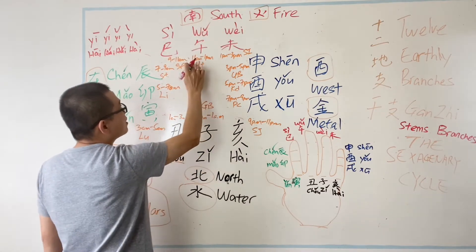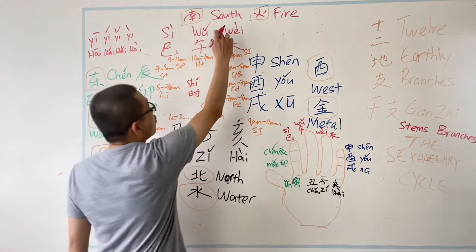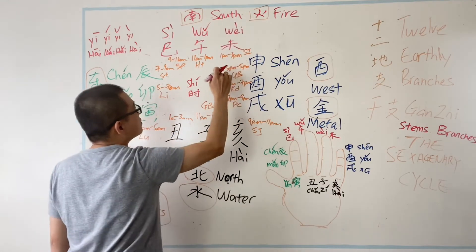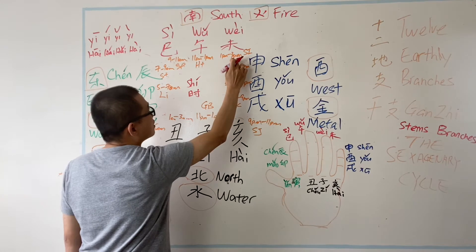午时 is between 11am to 1pm, and 未时 is between 1pm to 3pm.